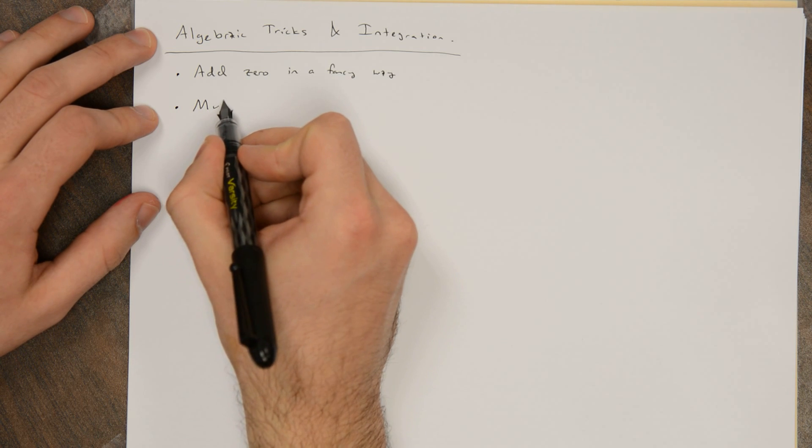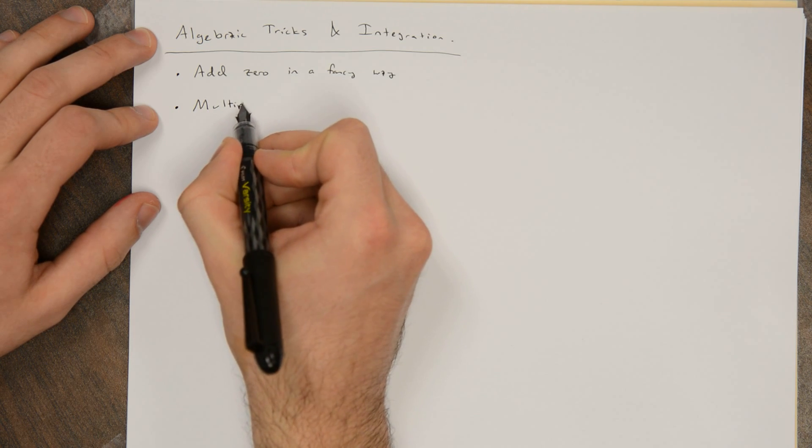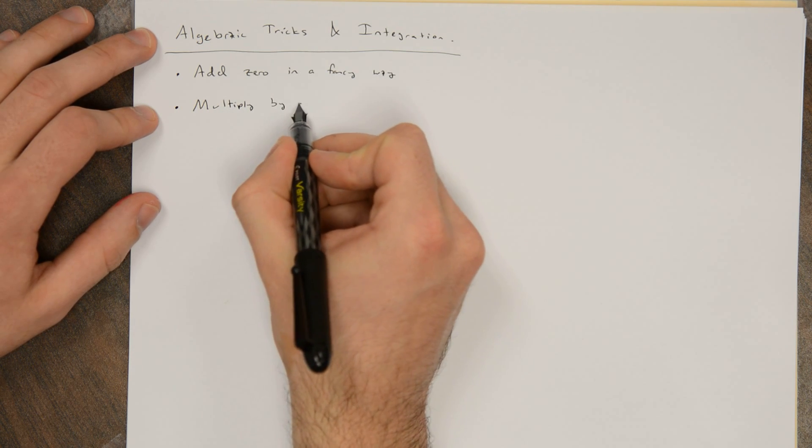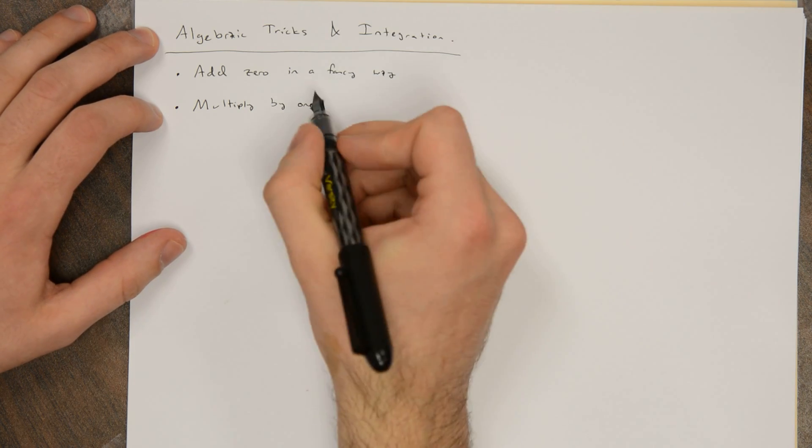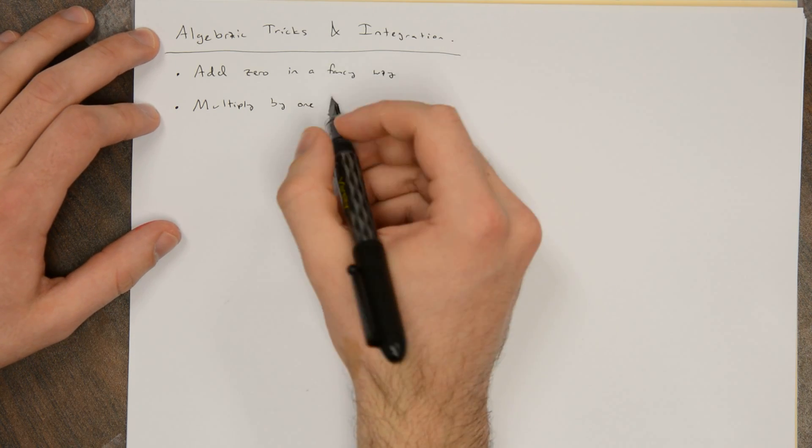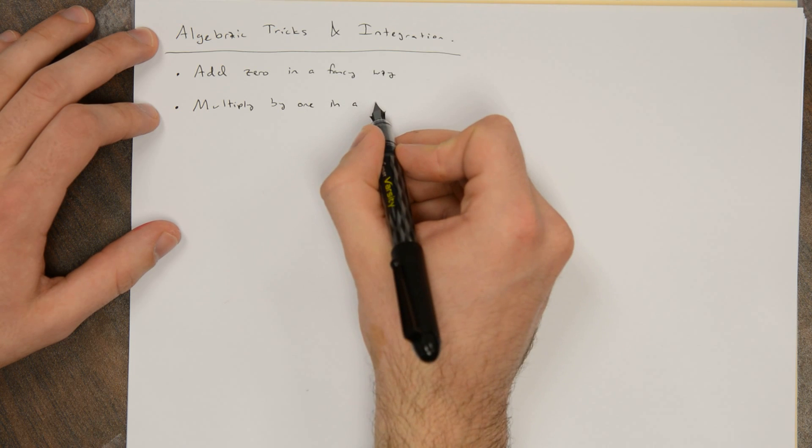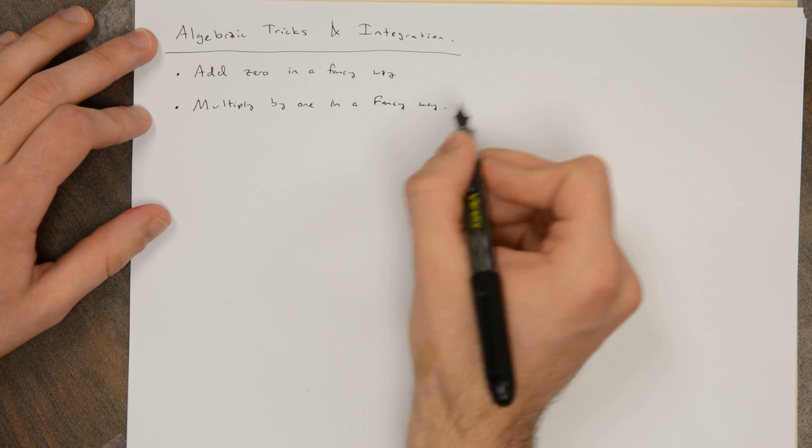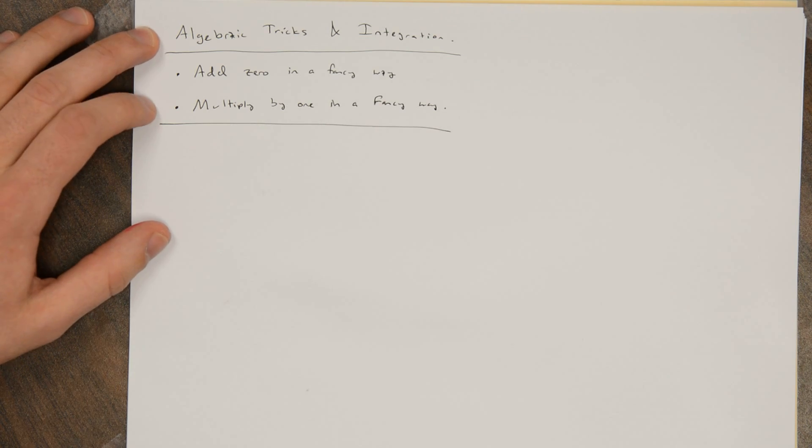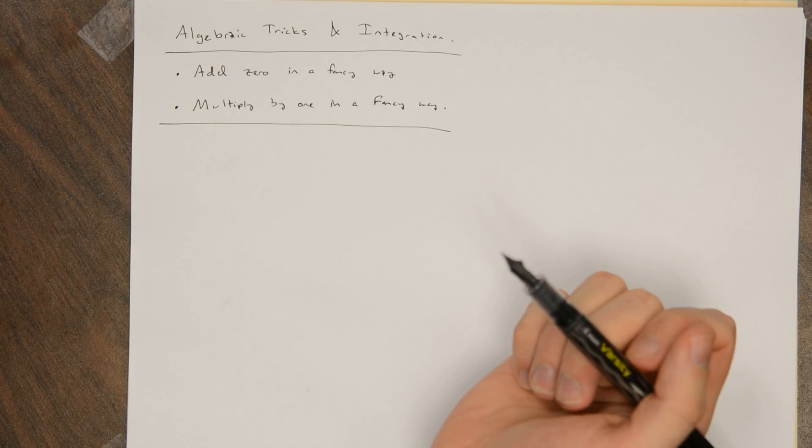And likewise, multiplying something by one doesn't change anything. But if you multiply and divide by something in a fancy way, sometimes good things will happen as well. So let's see how we can add zero in a fancy way to solve some problems.